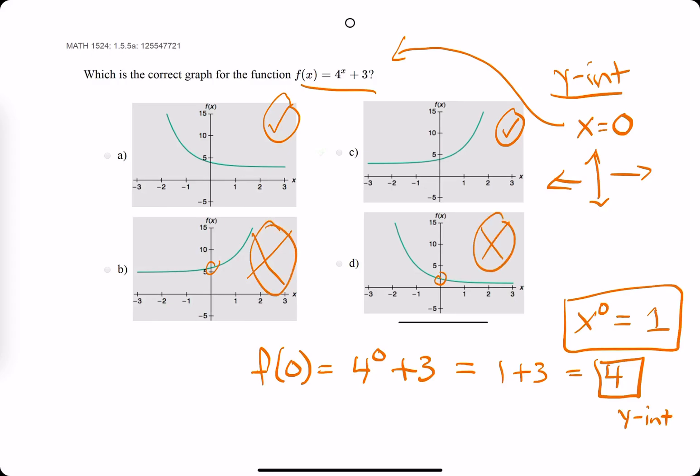So the question is how do we tell if it's decreasing like option a or increasing like option c? We don't see any negatives in our function, so maybe that indicates it's c. But to verify, we can plug in an x value.